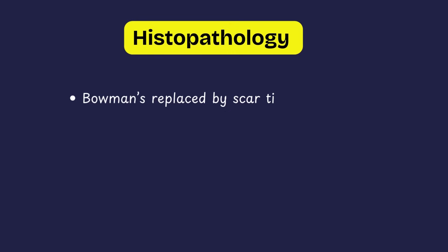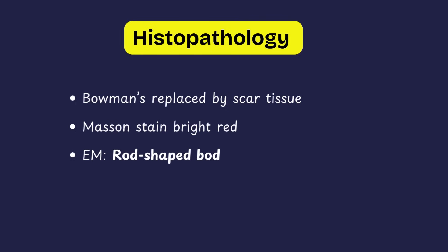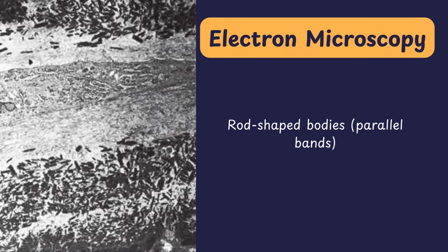On histopathology, the Bowman's layer is absent and gets replaced by scar-like tissue consisting mostly of acellular hyaline deposits. On Masson's trichrome stain, they appear as bright red bands. On electron microscopy, rod-shaped bodies arranged in parallel bands are found — this is a high-yield feature of RBCD. Remember: R for Rees and R for rod-shaped bodies.